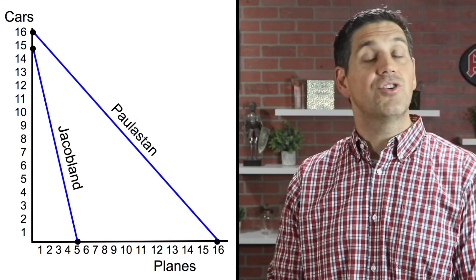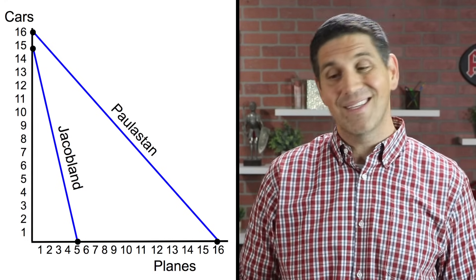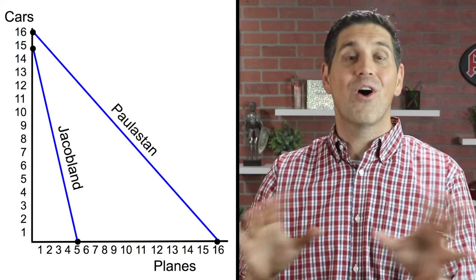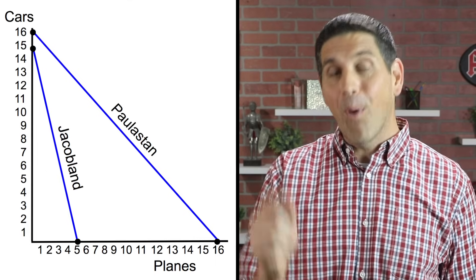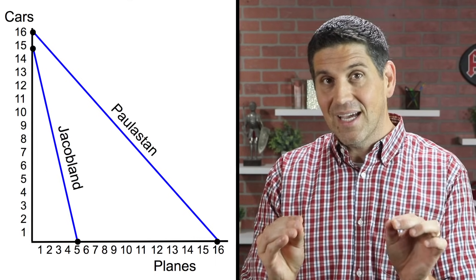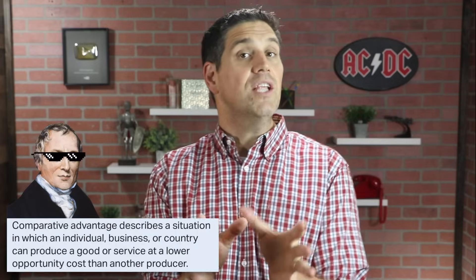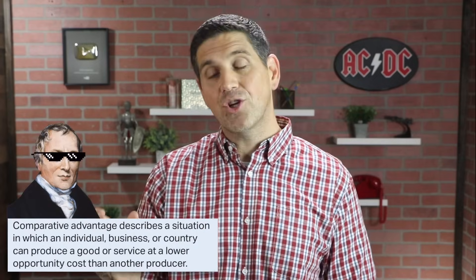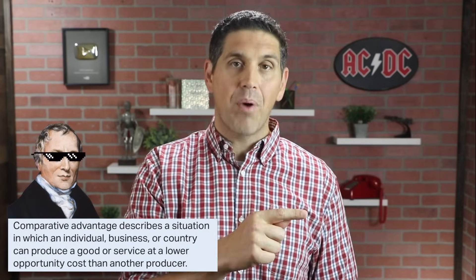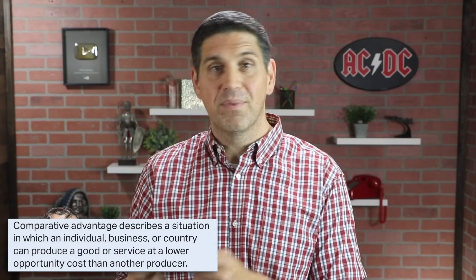At first glance, you might think that Polistan has no incentive to trade because they can produce more of both goods — but no, no, no. Both countries can still benefit. That's the idea of comparative advantage. Each country can specialize in just one product and then trade for the other product at a lower opportunity cost than if they produced it themselves.